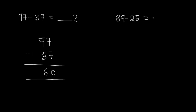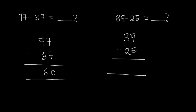Let's look at another example: 39 minus 26. I write down 39, bring my subtraction sign, and write 26. Subtracting the ones first: 9 minus 6 gives us 3. Now moving to the tens: 3 minus 2 gives us 1. So 39 minus 26 gives us 13.